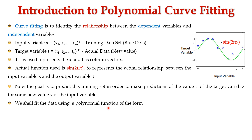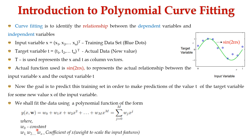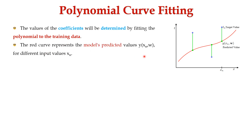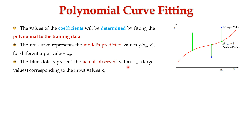We shall fit the data using a polynomial function of the form y(x, w) = w0 + w1·x + w2·x² + ... + wM·x^M, which equals the summation of j from 0 to M of wj·x^j, where w0 is a constant and w1, w2 up to wN are coefficients of x. The values of the coefficients are determined by fitting the polynomial to the training data. The red curve represents the model predictor values y(xn, w) for different input values xn, and the blue dots represent the actual observed values tn — also called target values corresponding to input values xn.